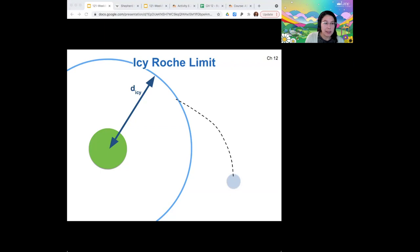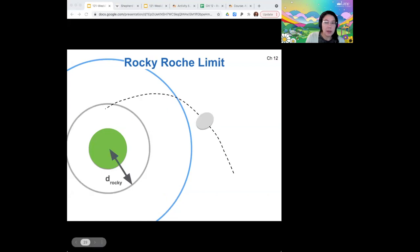So for this reason, we can kind of imagine two different Roche limits for a planet. We could think there's one icy Roche limit where if a moon happens to cross past that limit, then it will get torn apart, broken into small pieces. And eventually those small pieces will spread out and create a ring.